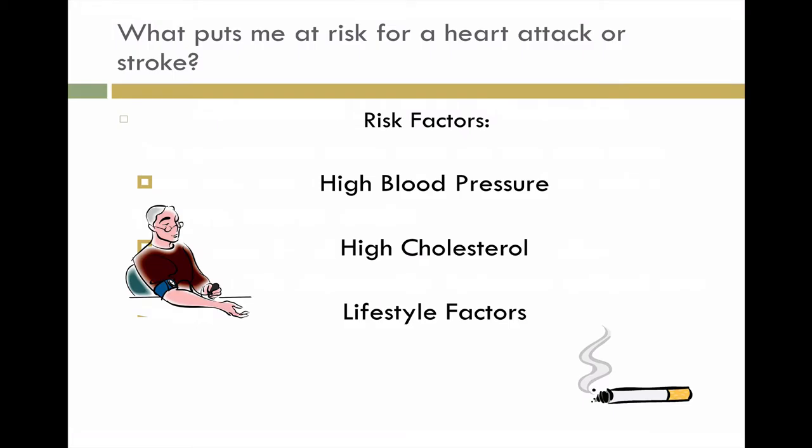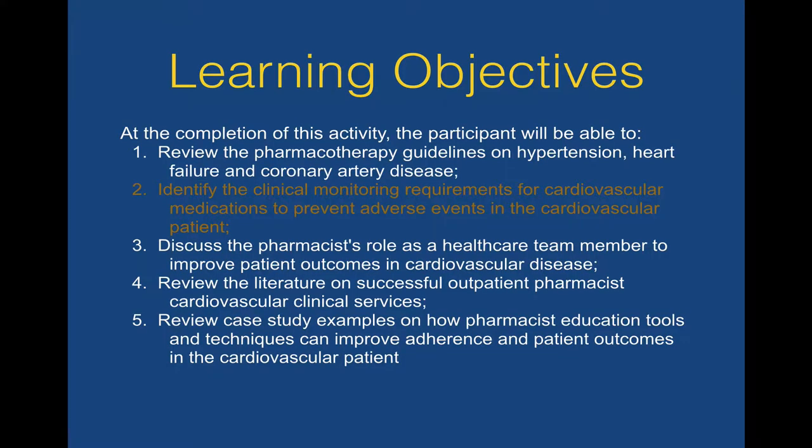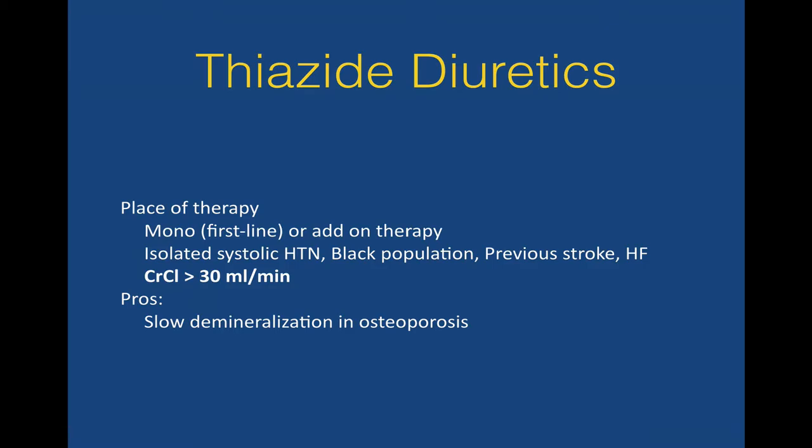A key thing we can do in our pharmacies is get on any website with a cardiovascular risk calculator, do a blood pressure screening, and identify risk factors. These include age above 40, male sex, African American race (which is at greater risk for cardiovascular disease), history of hypertension, diabetes, and tobacco use. Measurements such as cholesterol, HDL, and systolic blood pressure are inputs. These calculators give an estimated 10-year risk for the development of coronary artery disease — a great place to start talking about therapies such as statin therapy.